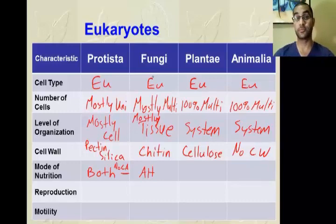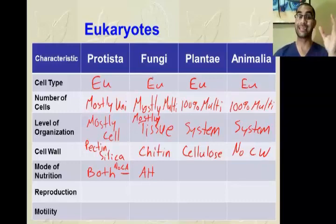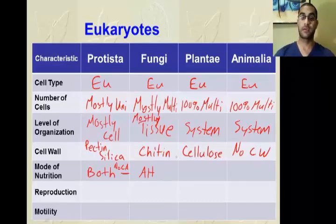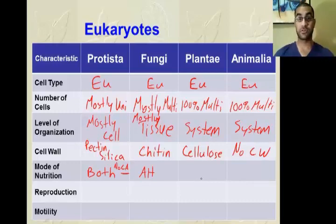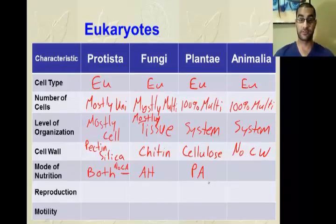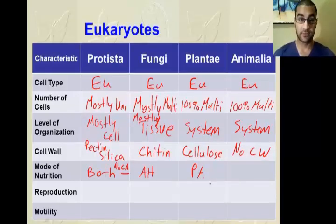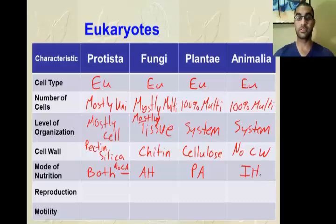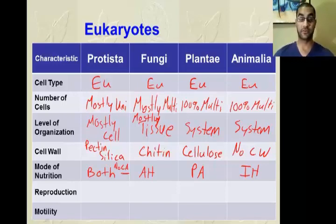Kingdom Plantae is 100% photosynthetic autotrophs — they're always our producers at the first trophic level in ecology, using solar energy to produce their sugars. No chemosynthesis in plants. Kingdom Animalia is 100% ingestive heterotrophs — they bring the food in, physically and chemically break it down inside, then use it as a nutrient source. This contrasts with Fungi's absorptive heterotrophs that break food down outside first and then absorb it in.